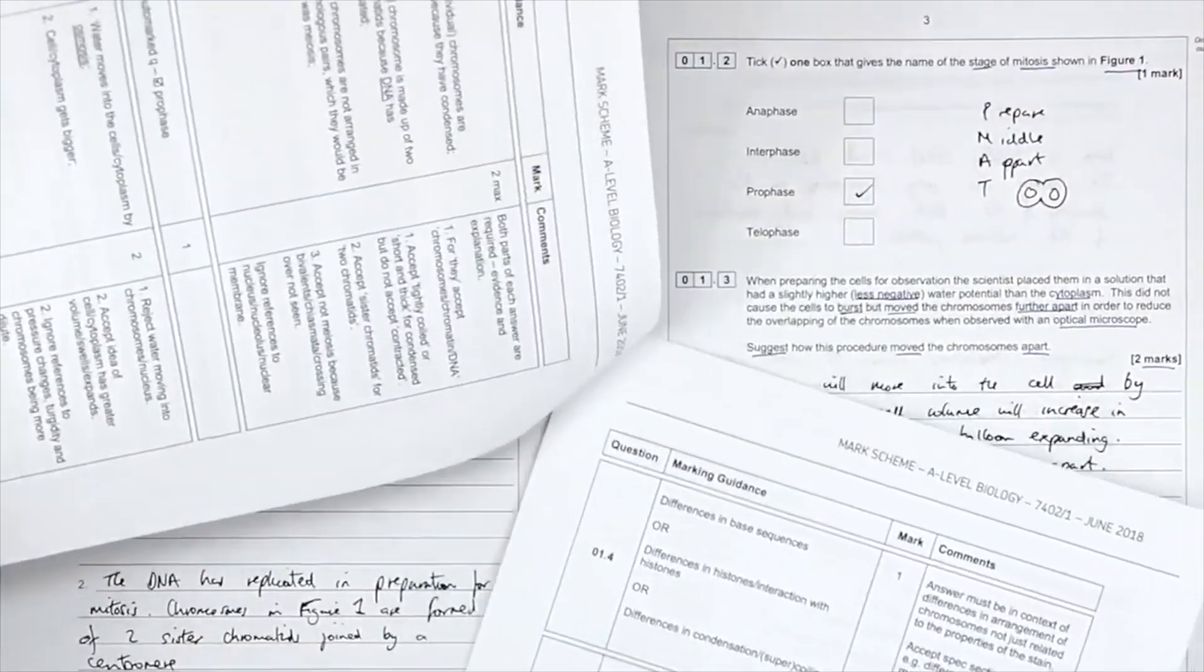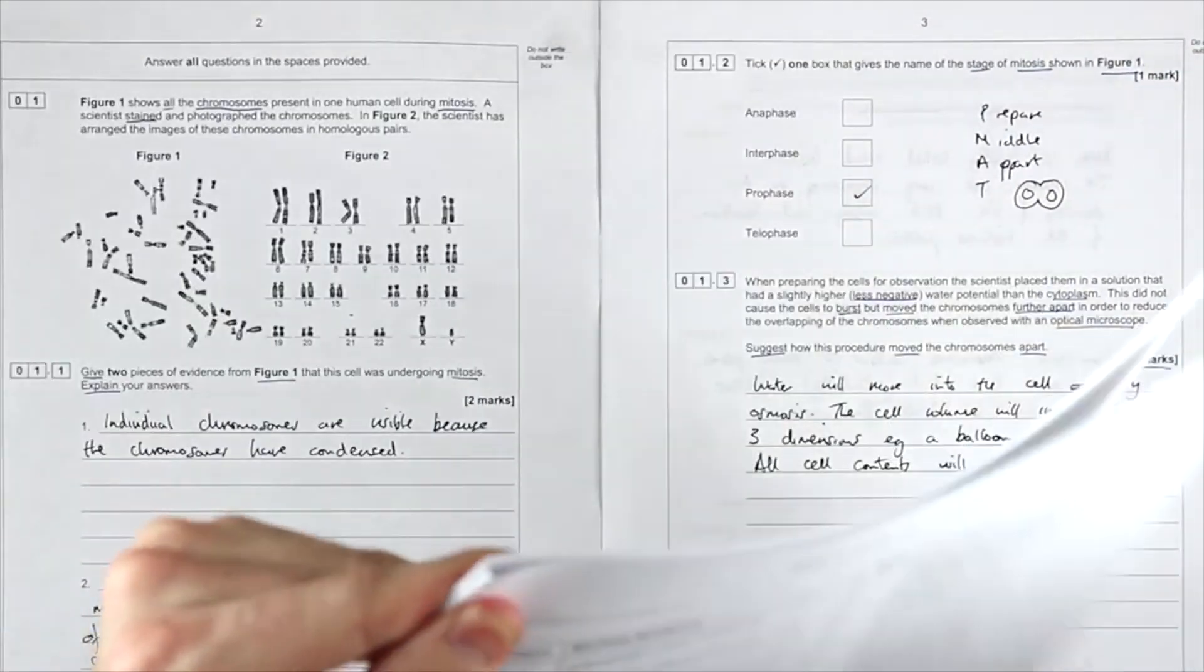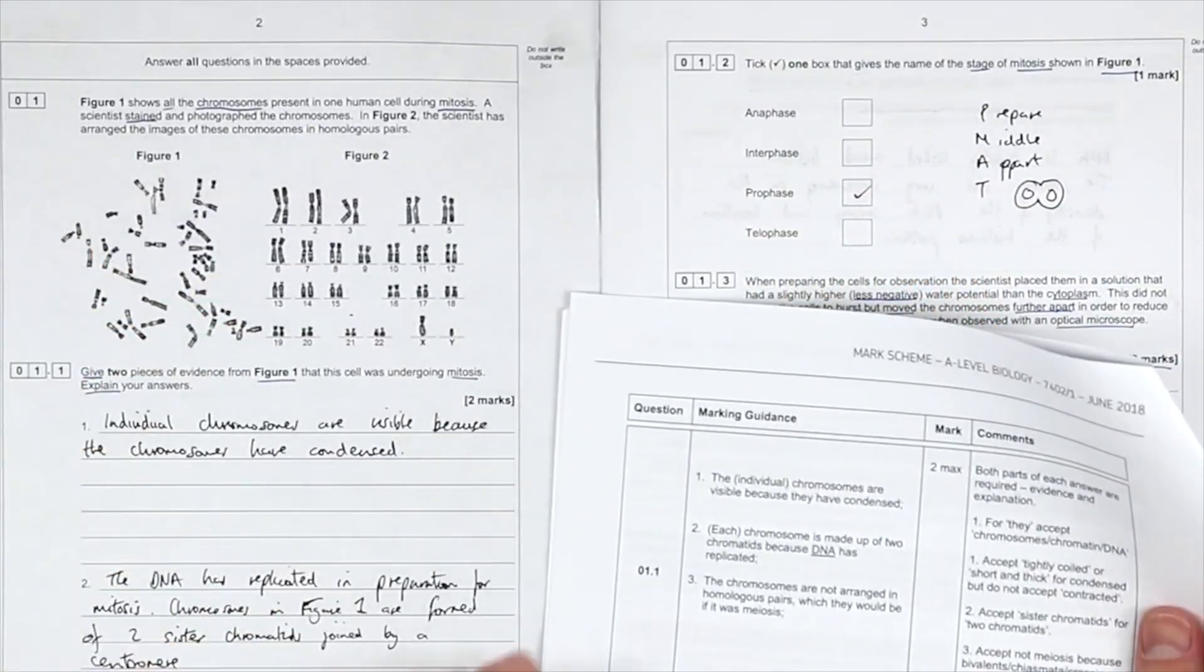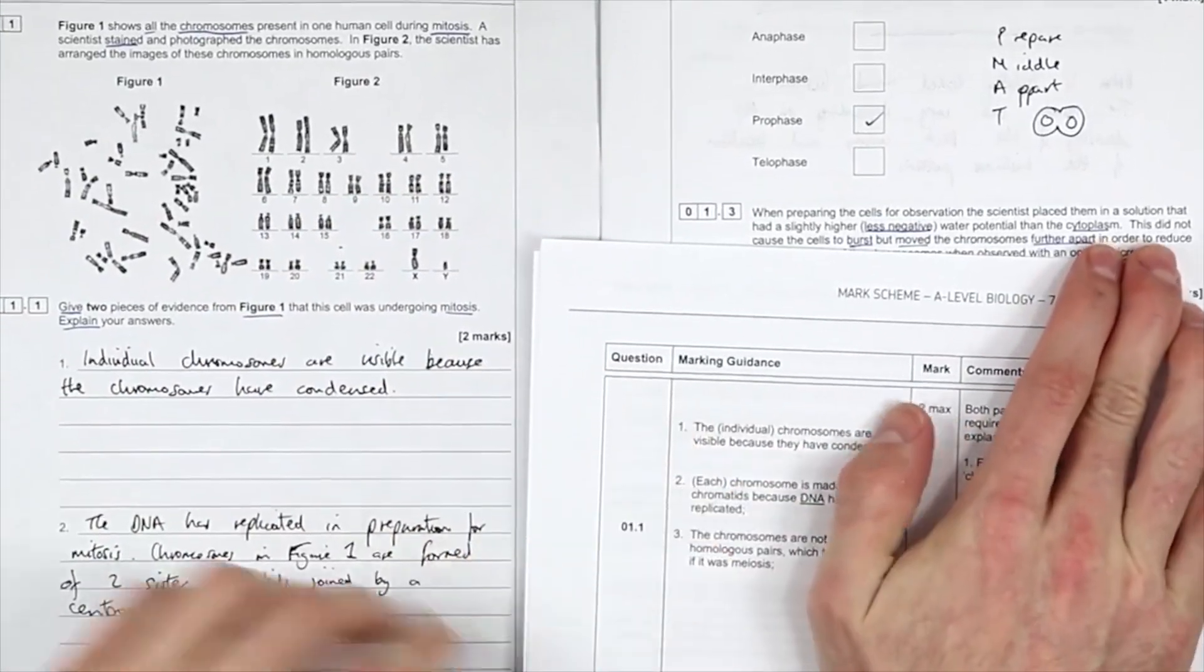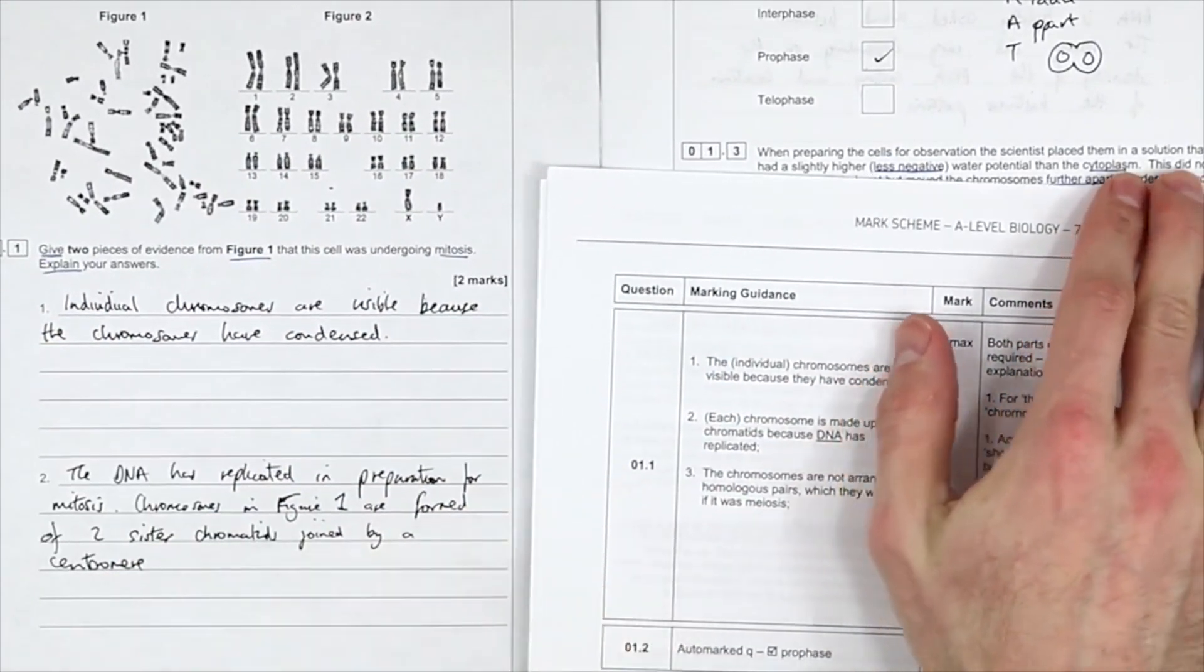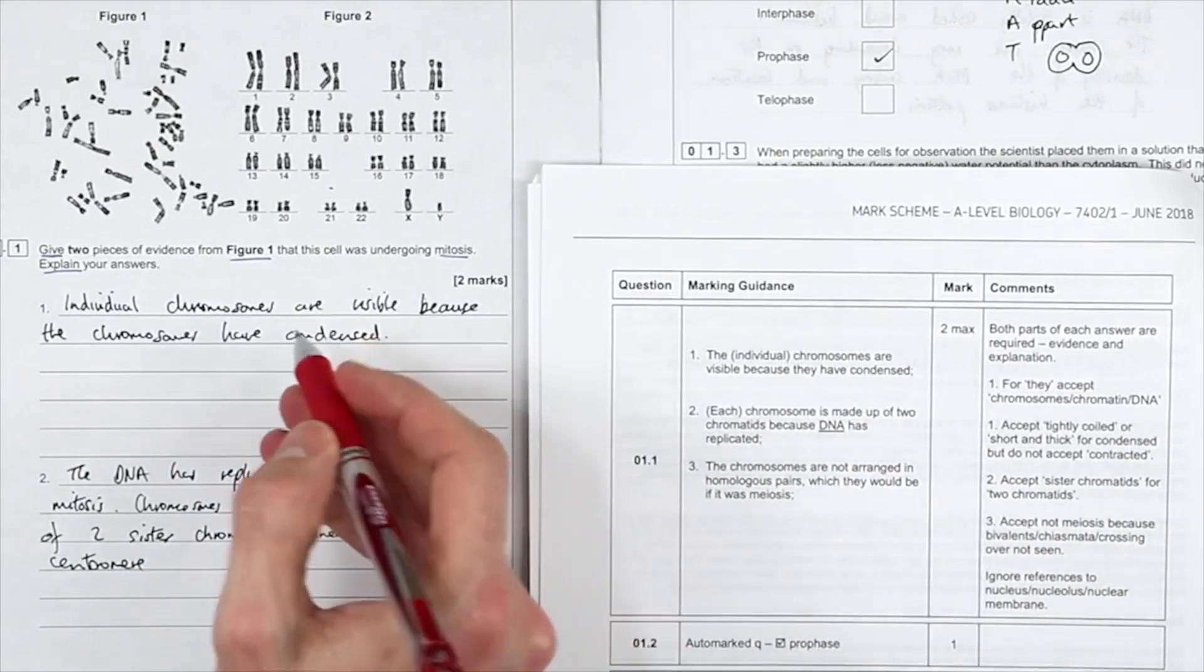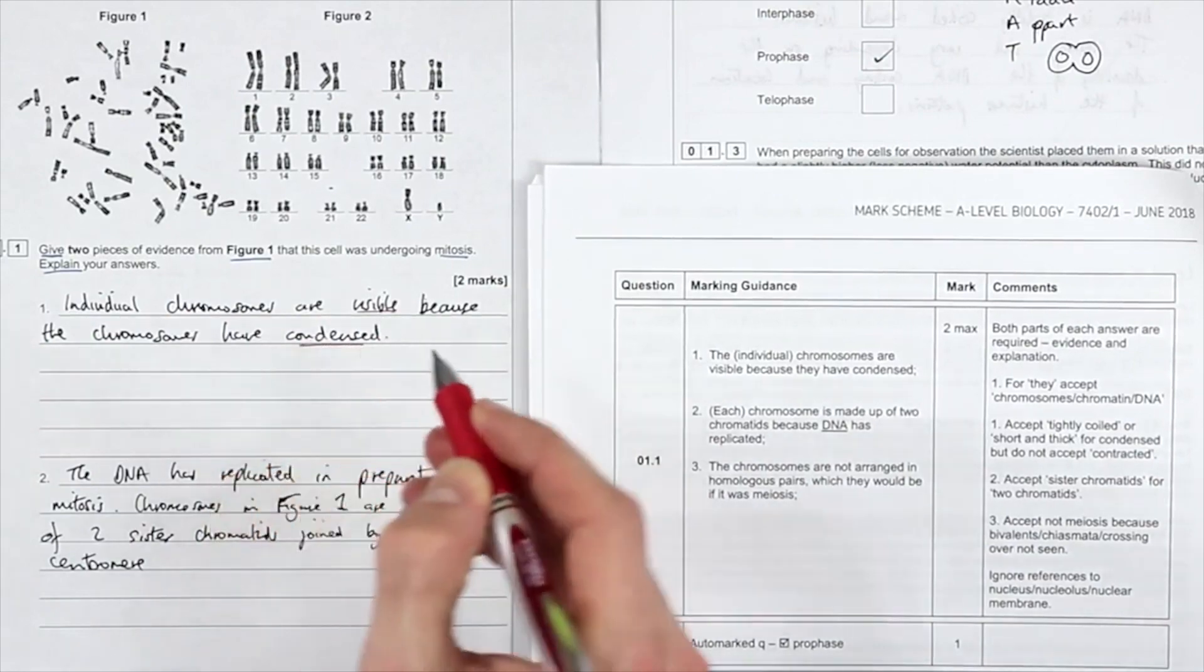Okay, so question 1.1. What have we got here? I'll bring it in. I'll read my answer first. Two pieces of evidence it was undergoing mitosis. Individual chromosomes are visible because they have condensed.